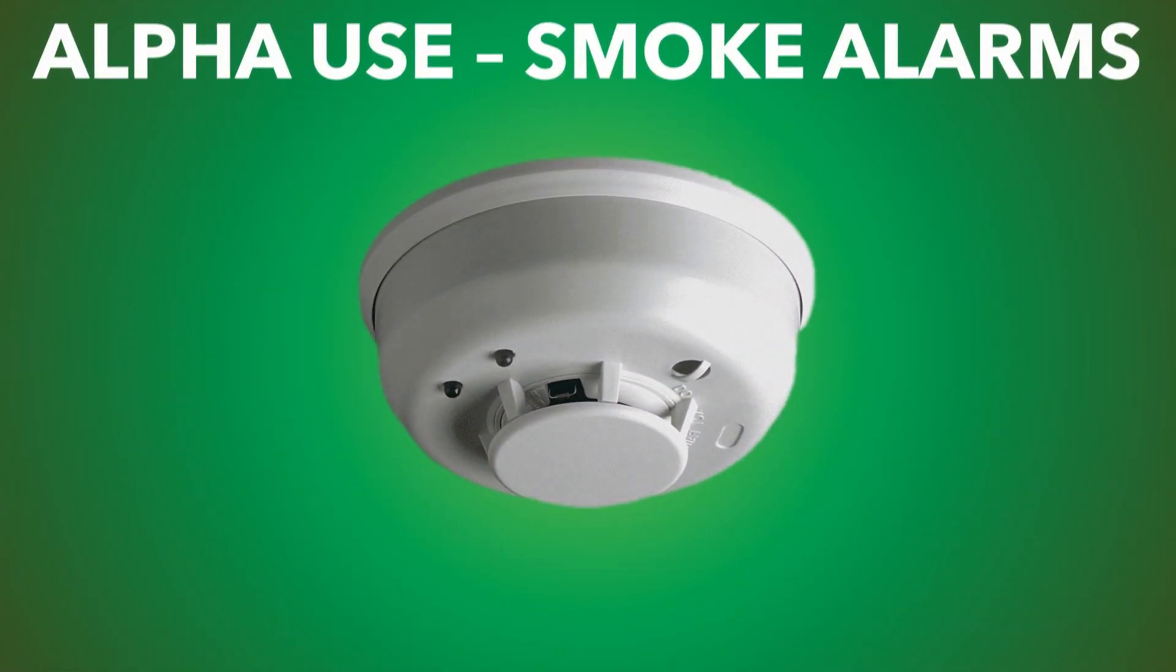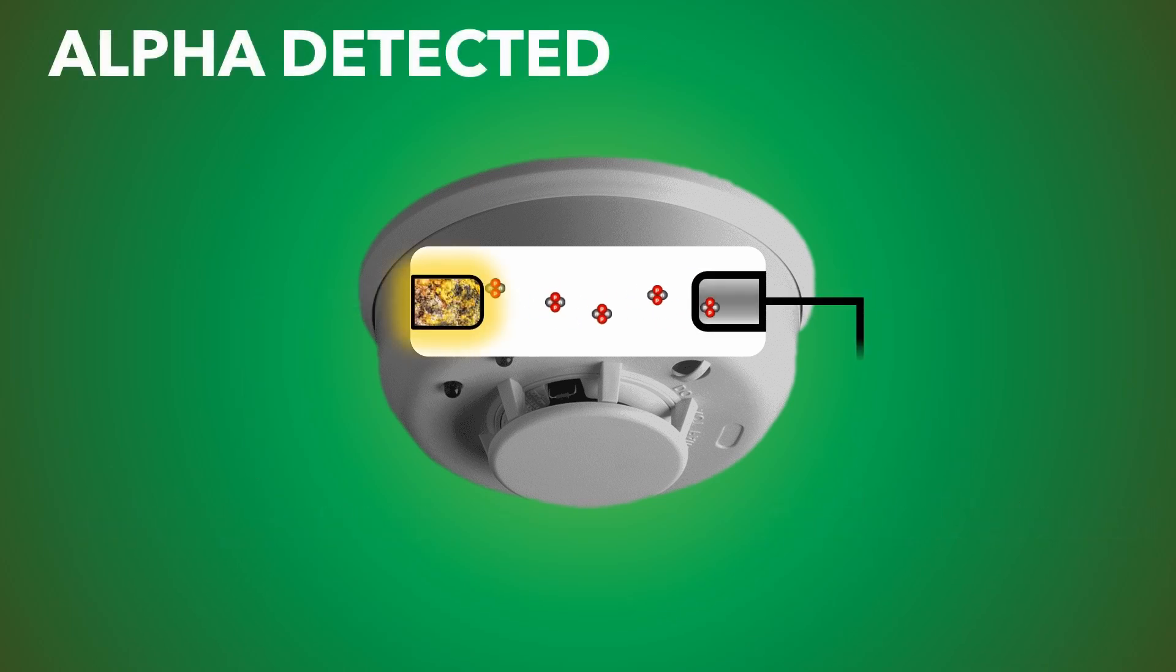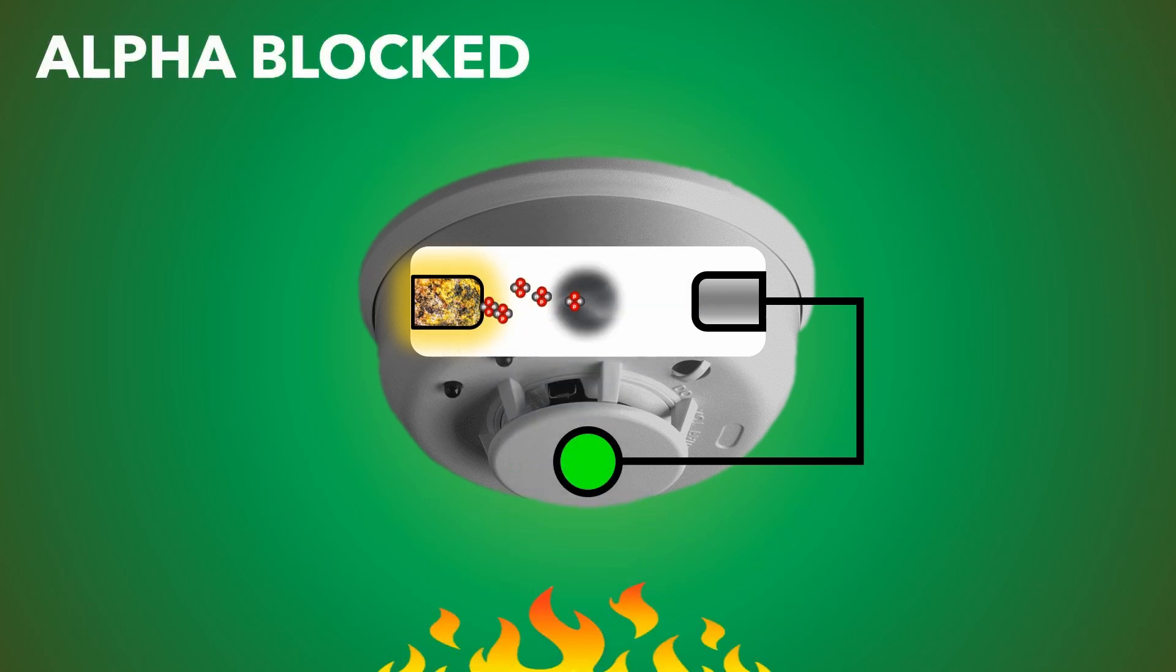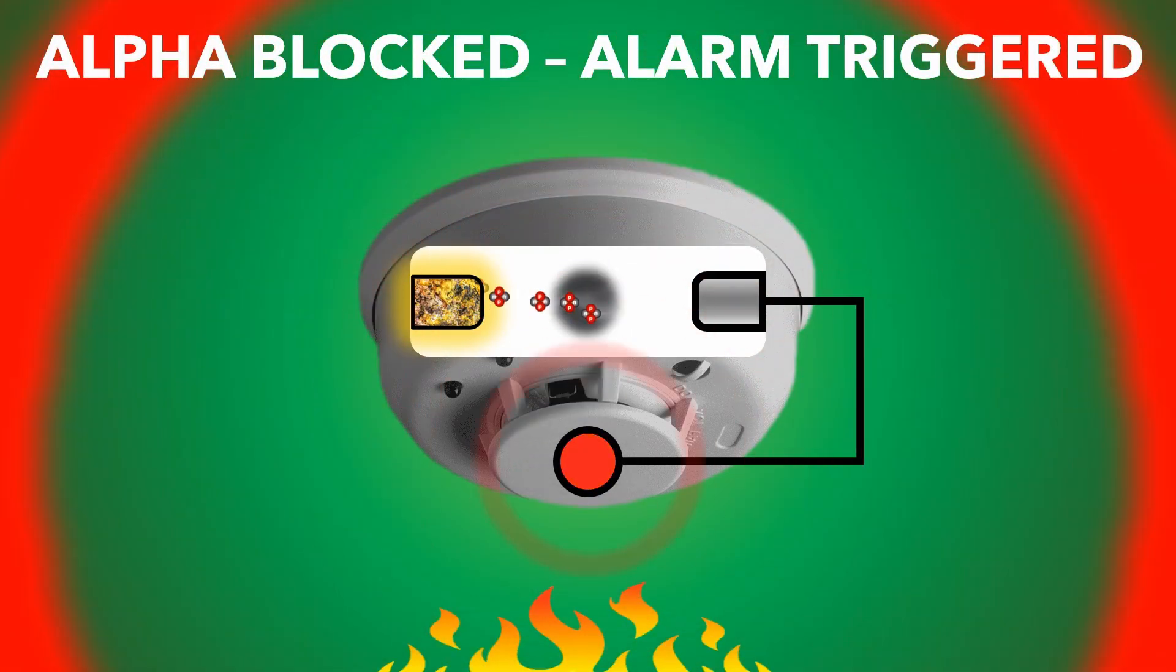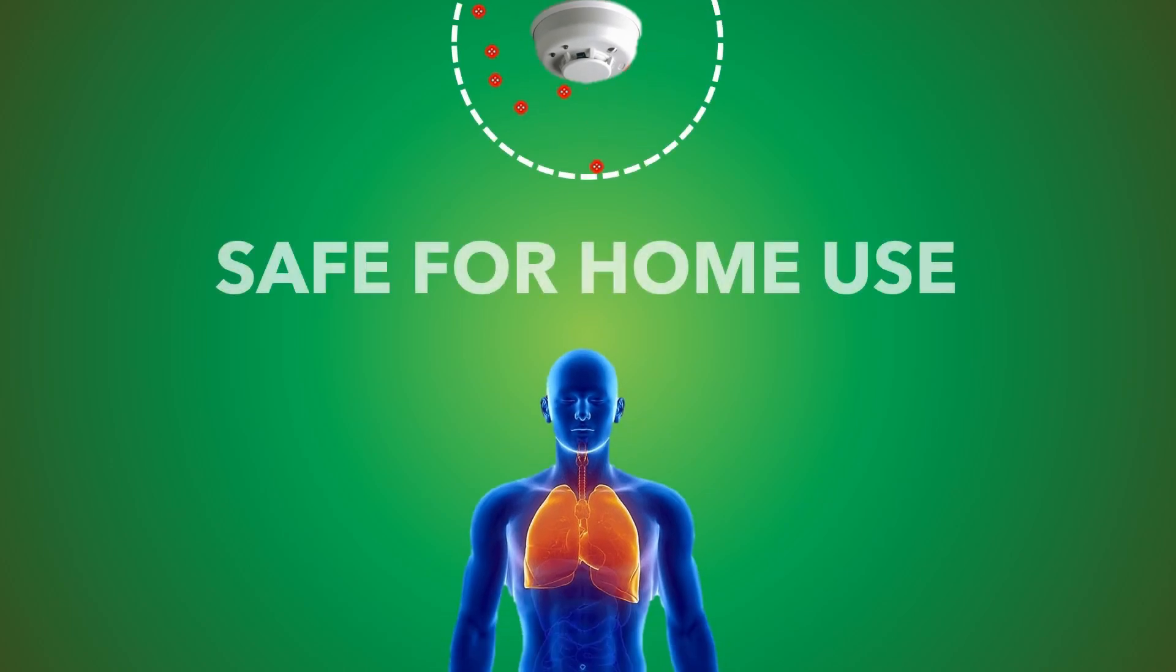Alpha use: smoke alarms. Inside a smoke alarm is an alpha source and a detector. When alpha is detected, the alarm is silent, but when smoke enters and blocks the alpha, the alarm is triggered. Because alpha has a 5 centimeter range in air, it is safe for home use.